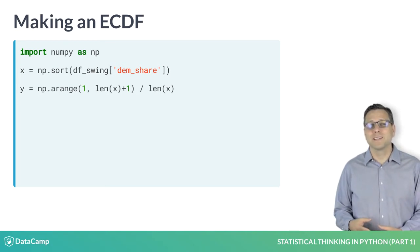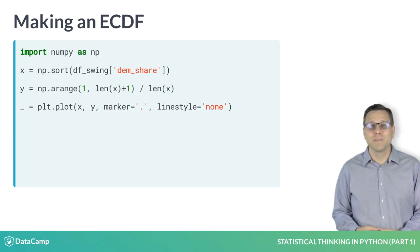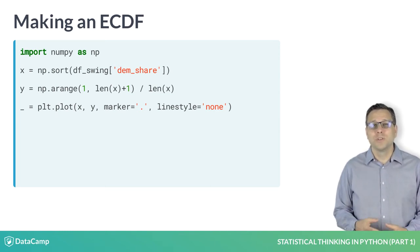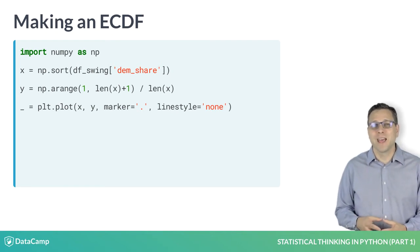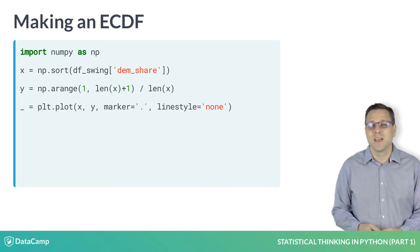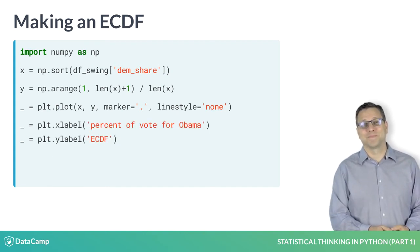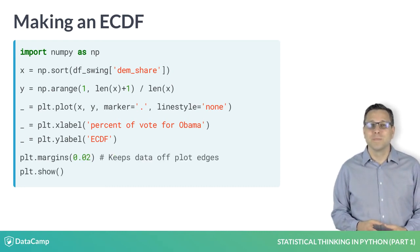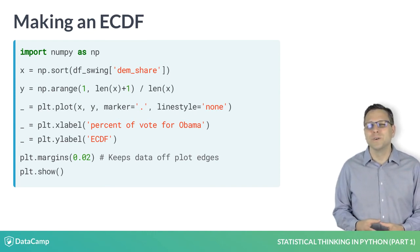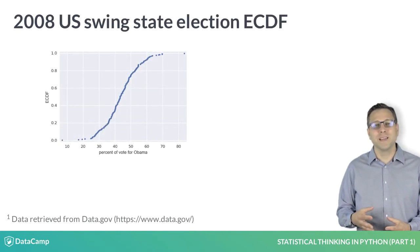Once we specify the X and Y values, we plot the points. By default, plt.plot plots lines connecting data points. To plot our ECDF, we just want points. To achieve this, we pass the string period and the string none to the keyword arguments marker and linestyle, respectively. As you remember from my forceful reminder in an earlier video, we label the axes. Finally, we use the plt.margins function to make sure none of the data points run over the side of the plot area. Choosing a value of 0.02 gives us a 2% buffer all around the plot. The result is the beautiful ECDF I just showed you.